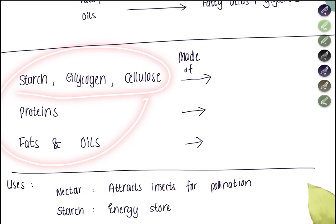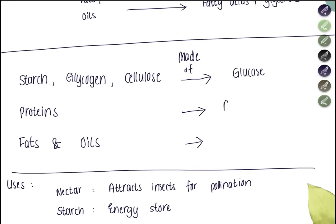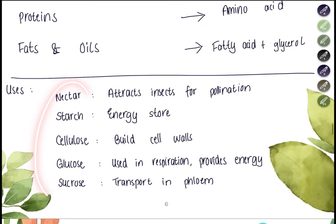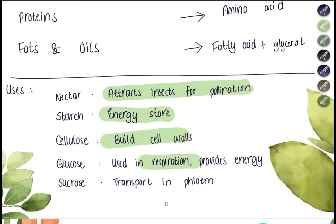Complex substances are made up of simpler ones: starch, glycogen, and cellulose are made up of glucose; proteins are made up of amino acids; fats and oils are made up of fatty acids and glycerol. Their uses include: nectar attracts insects for pollination; plants store food as starch; cellulose builds cell walls; glucose is used in respiration for energy; sucrose is used for transport; and amino acids are used to make proteins.